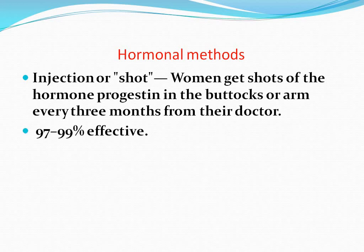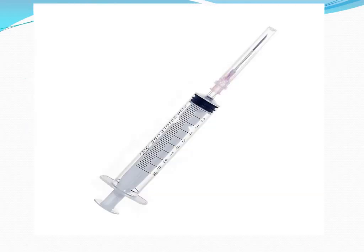Hormonal methods: Injection or shot. Women get shots of the hormone progesterone in the buttocks or arm every 3 months from their doctor. This is 97 to 99% effective.